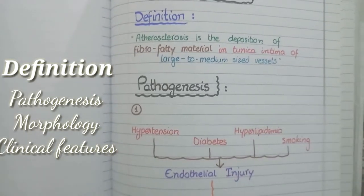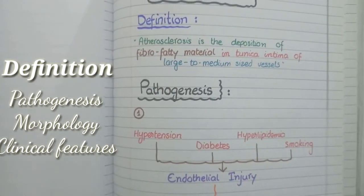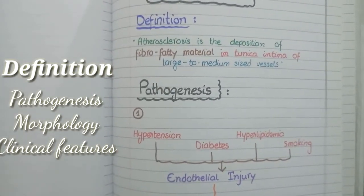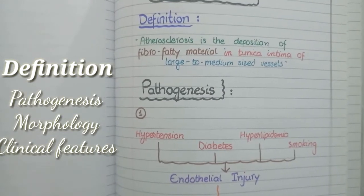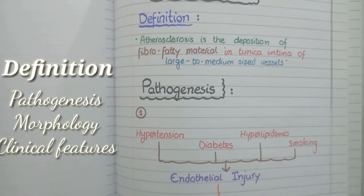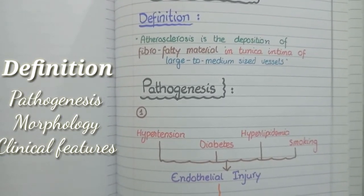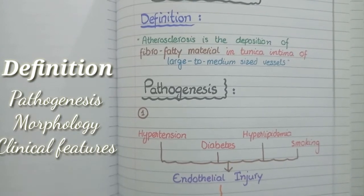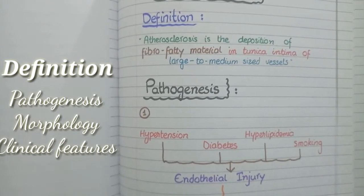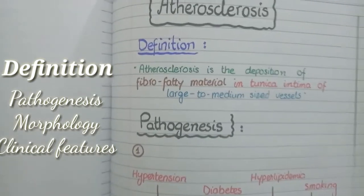In this video, we will discuss the pathology of atherosclerosis in detail. Firstly, we will see its definition and pathogenesis, then we will learn its morphology in detail, and at last, we will see the clinical pathological consequences of atherosclerosis in detail.